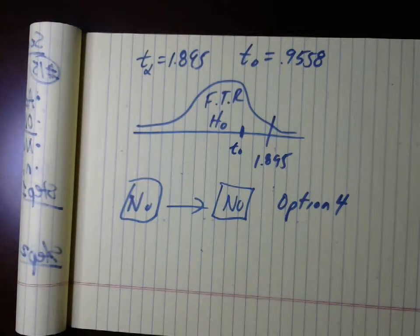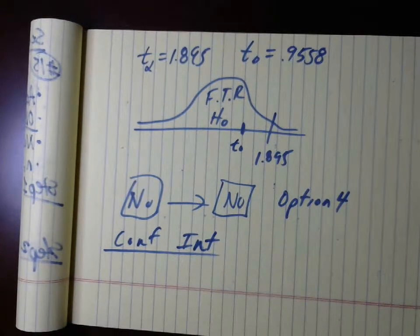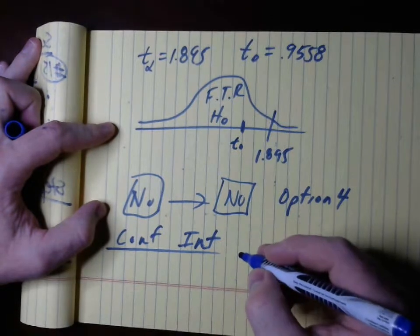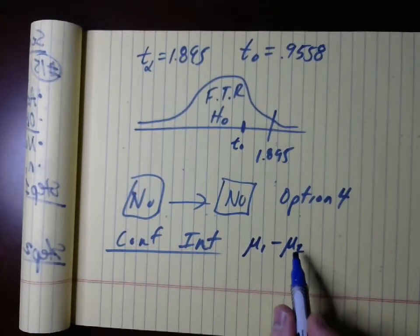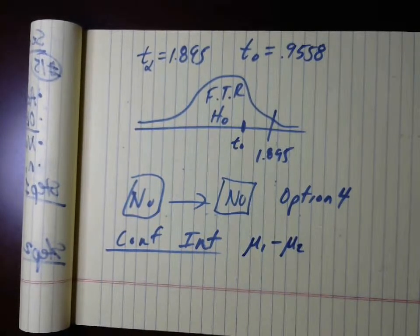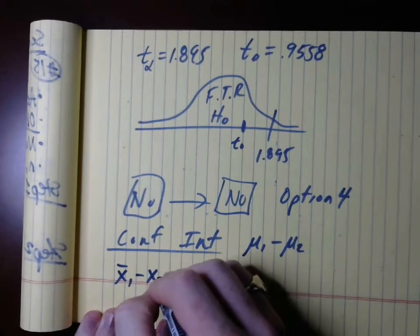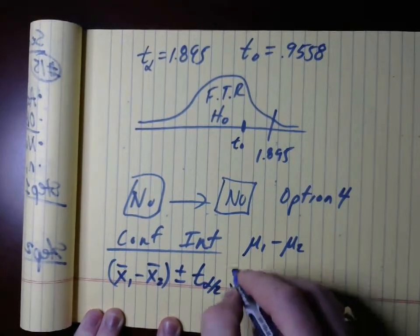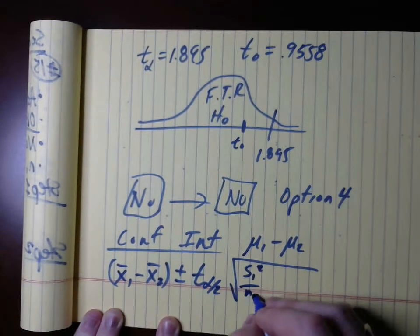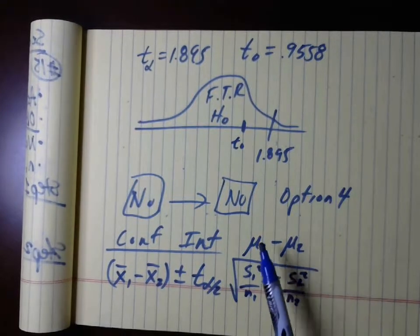Similarly to proportions, we also have a confidence interval. The confidence interval for μ₁ − μ₂ - the difference between the two population means - at a given confidence level is: (x-bar₁ − x-bar₂) ± t_{alpha/2} × √(s₁²/n₁ + s₂²/n₂). It's the same equation used for the test statistic - you're just solving for μ₁ − μ₂.